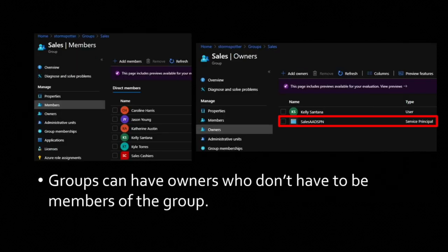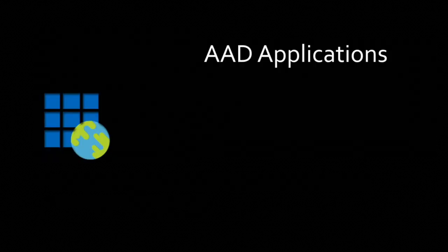Groups can have members or owners who don't have to be members of the group. We have the sales group with two owners: one is Kelly Santana, and there's also a service principal that is an owner of the group. There is a service principal in charge of this group for one reason or another.